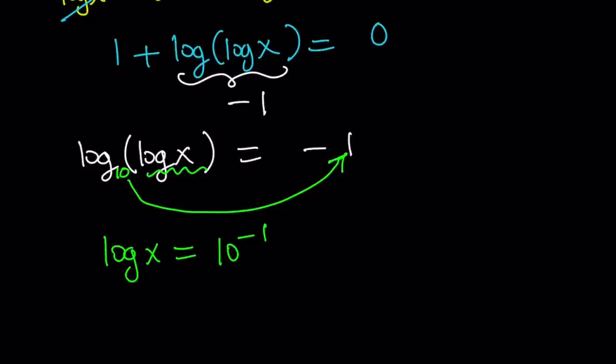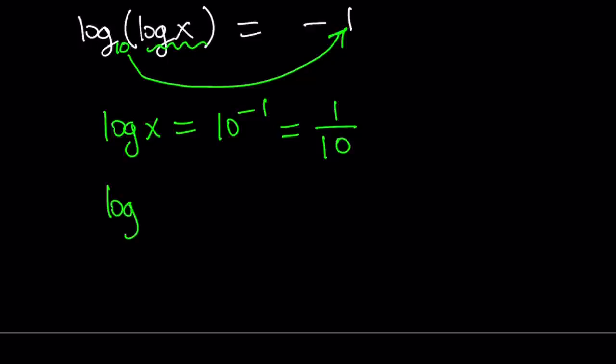And 10 to the power negative 1 is the reciprocal, so we can write it as 1 over 10. Now we've got another log equation because this is a double log. So log x equals 1 over 10. Again can be solved by using the definition. What is the definition? Put a 10 here and then raise 10 to the power 1 tenth. So from here we get x equals 10 to the power 1 over 10.